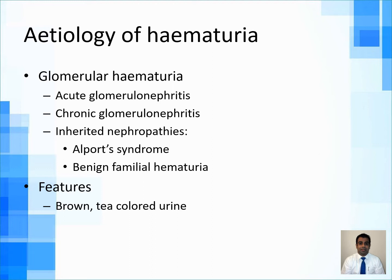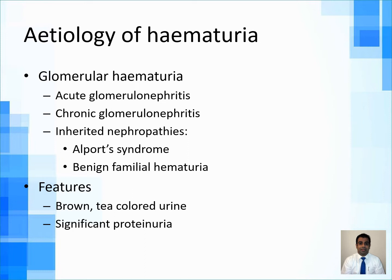The differentiation between glomerular and extra-glomerular hematuria is extremely important because there is a completely different set of investigations needed for each entity. If there is associated significant proteinuria — two plus or more — with the hematuria, this is not extra-glomerular. If there is significant proteinuria, think of a glomerular cause.